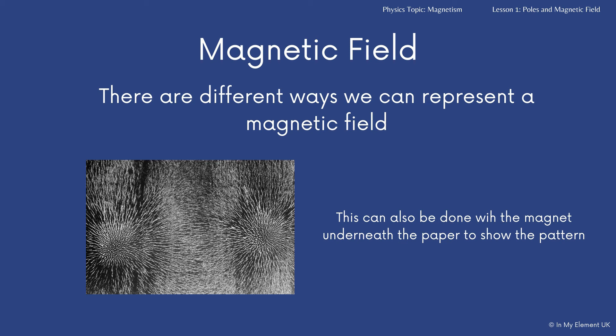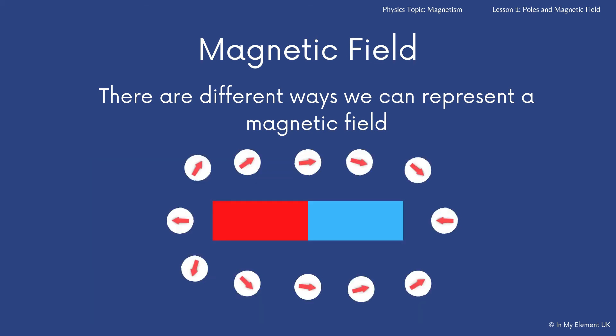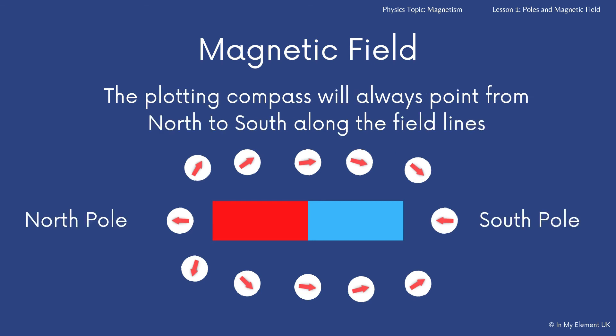There's another way to show the magnetic field, and this is done using plotting compasses. They will point in the direction of the magnetic field — from north to south, as we talked about earlier. So you place the plotting compass around; you might just have one, so you'd have to mark each time you move it where the arrow was pointing, and then you would be able to draw the field lines. That's quite a nice way of representing it as well.